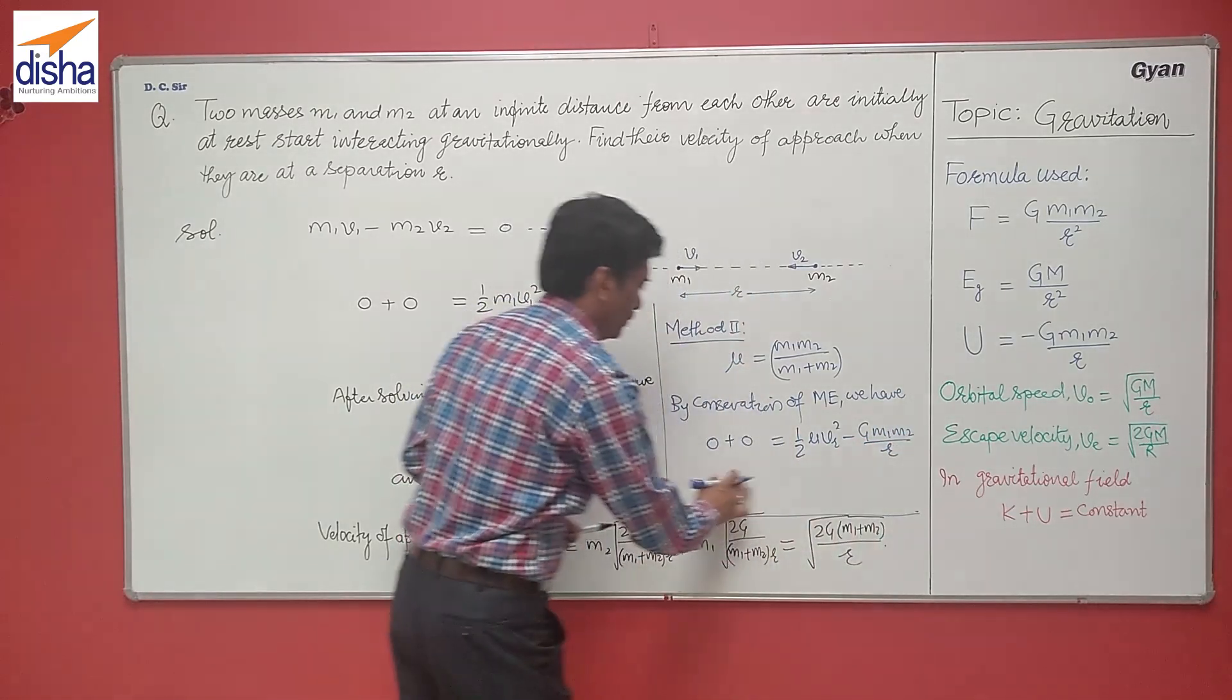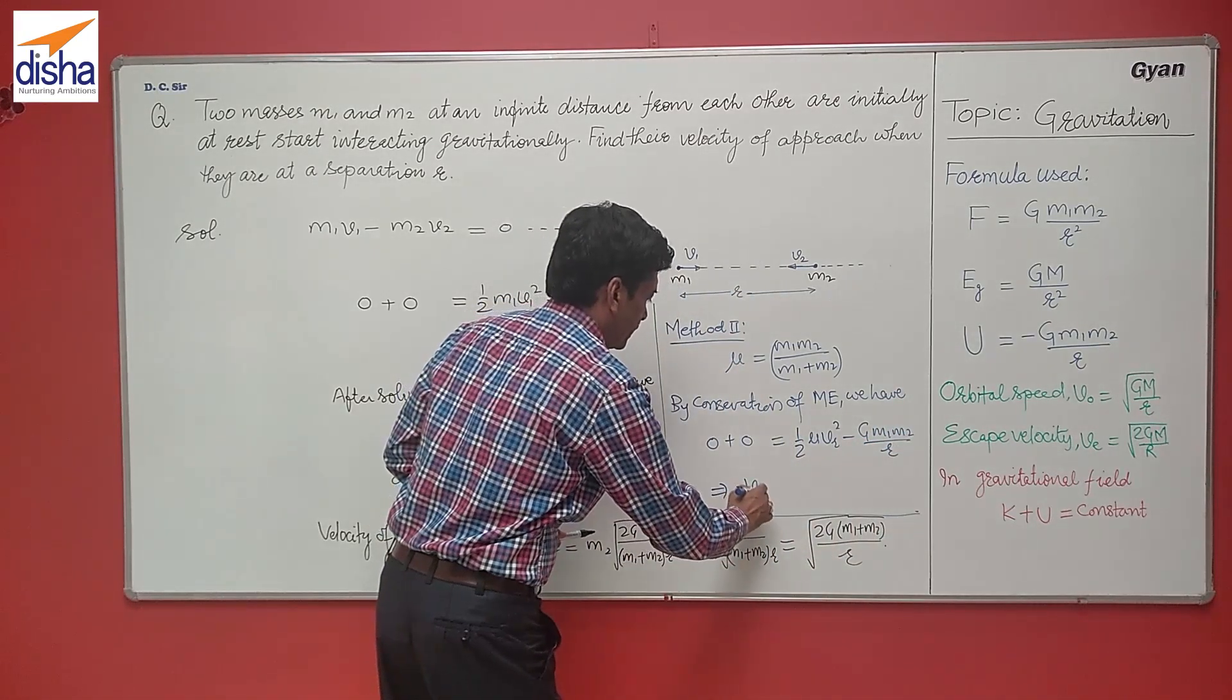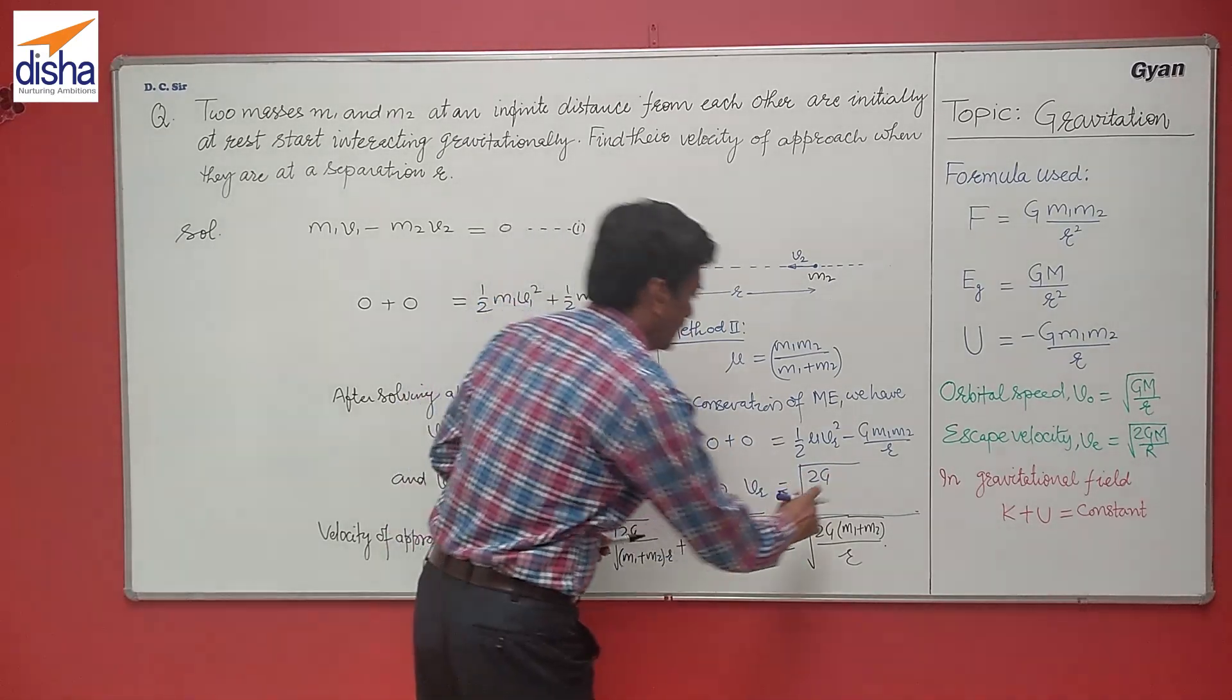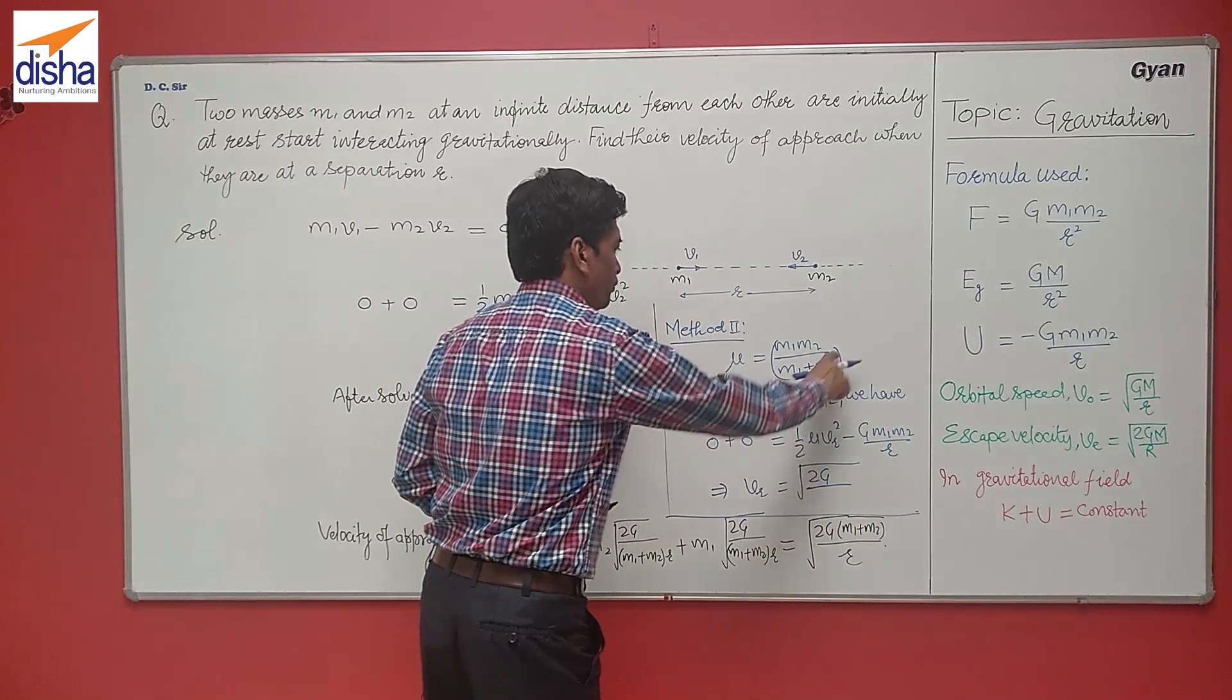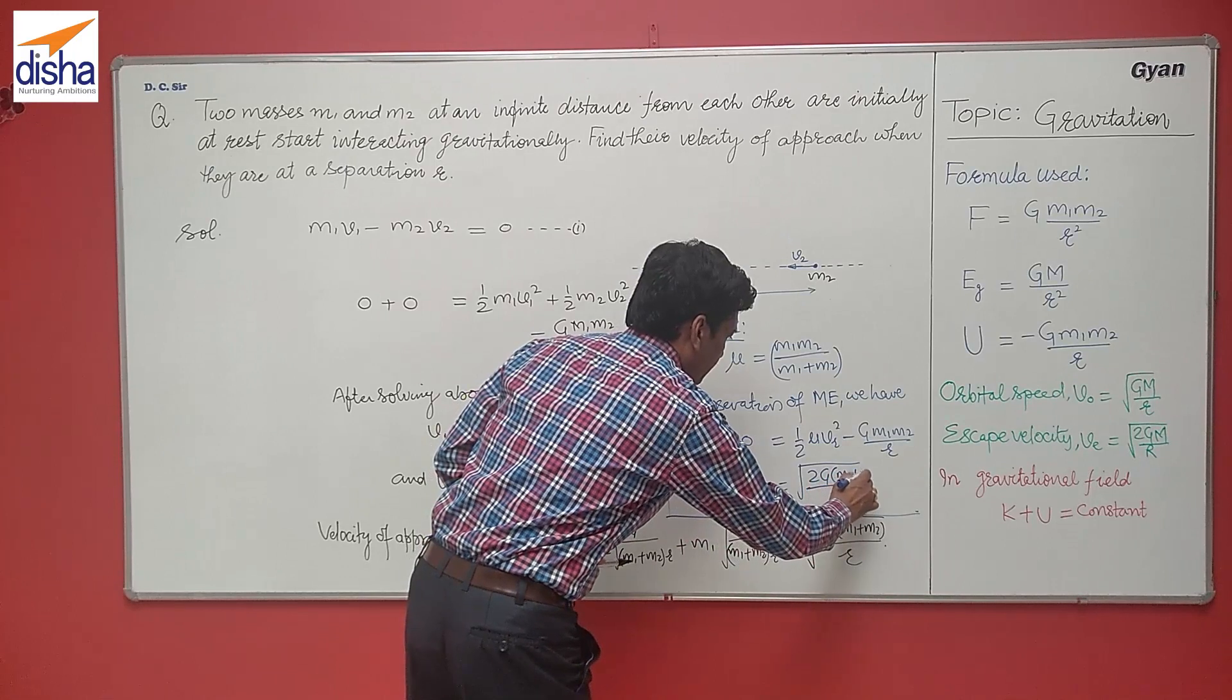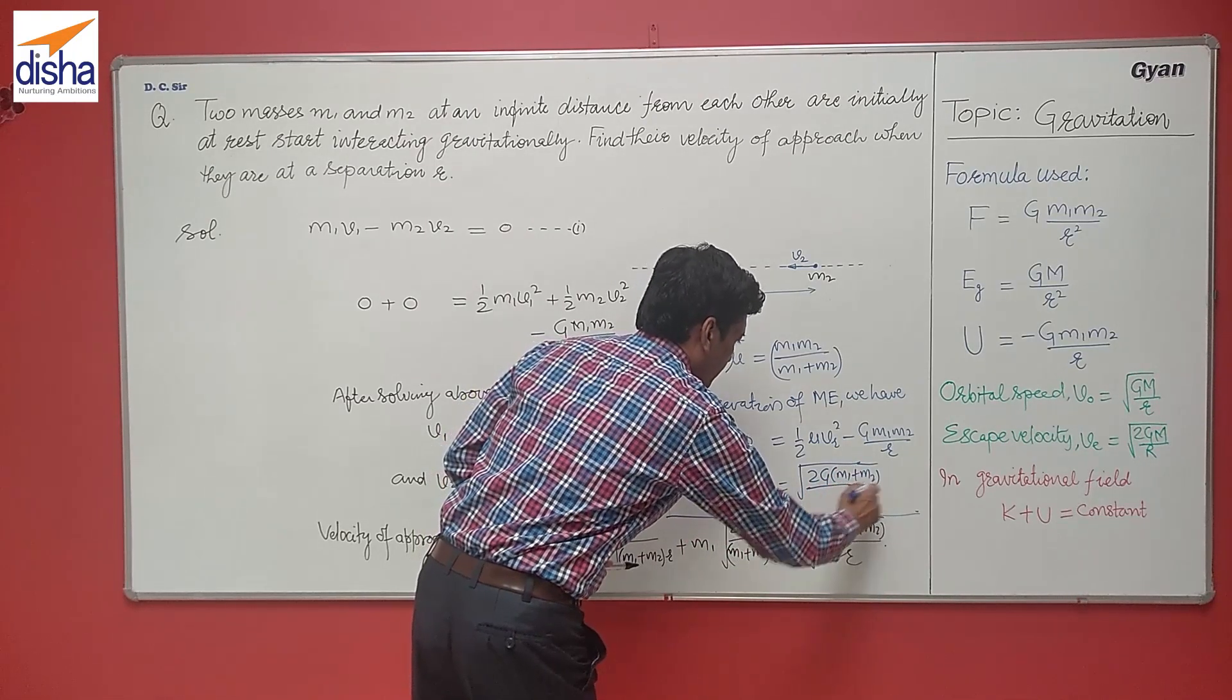On simplifying, we get Vr is equal to under root 2G, and putting the value of μ from this equation, we have 2GM1 plus M2 divided by R.